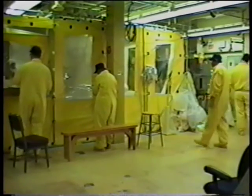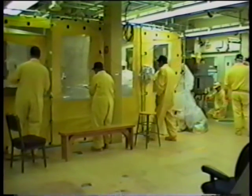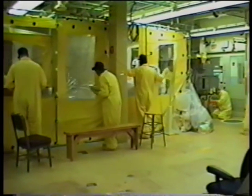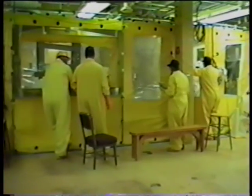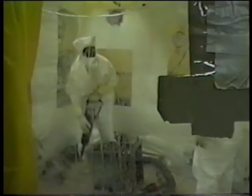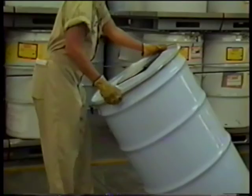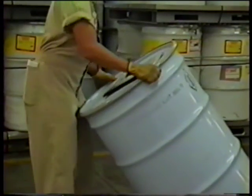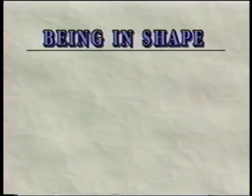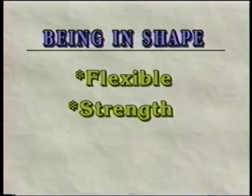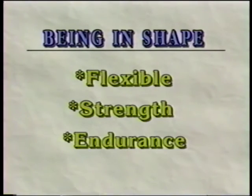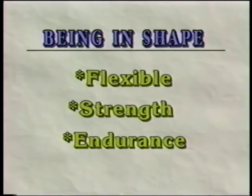Additionally, there are non-occupational issues such as age, general physical fitness, and hobbies that can contribute to the development of CTDs. Remember that what you do off the job will also contribute to what you do on the job. In general, the better shape you're in, the less likely you'll experience a cumulative trauma disorder. Being in good shape means your body is more flexible, has increased strength, and has increased cardiovascular endurance.